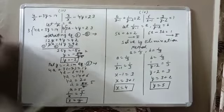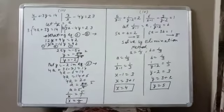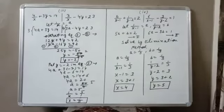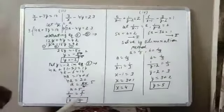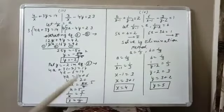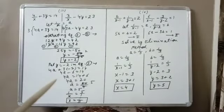So in the first three parts, we can take 1 upon x, 1 upon y, 1 upon root x, or 1 upon root y as a and b — it depends upon the question.